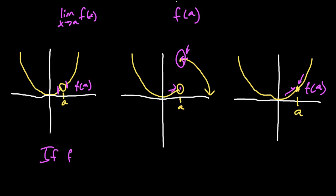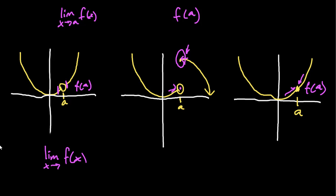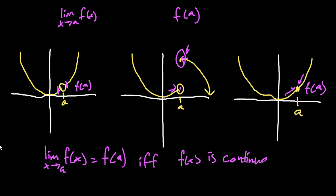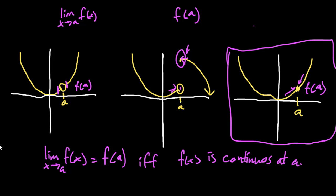Here's something I'd like to introduce. We're going to write this in a formal way because it goes both ways: the limit as x approaches some point a of f(x) equals f(a) if and only if f(x) is continuous at a. That notation — 'if and only if' — uses two arrows. To reiterate using our third graph: it is continuous at a, there is no discontinuity, the limit exists from both sides, so the limit as x approaches a equals f(a).